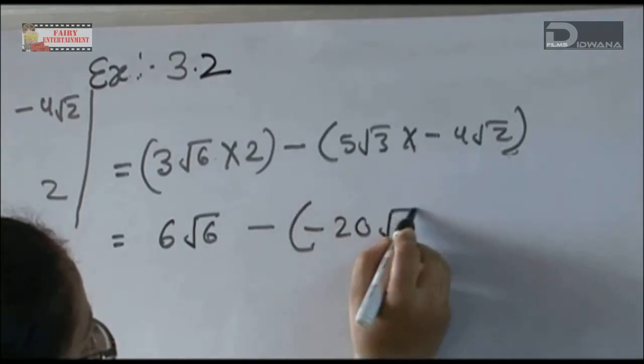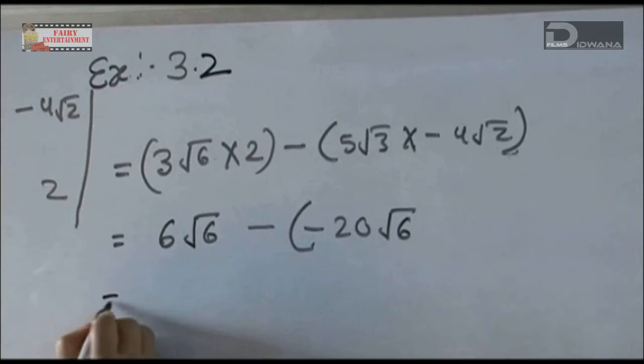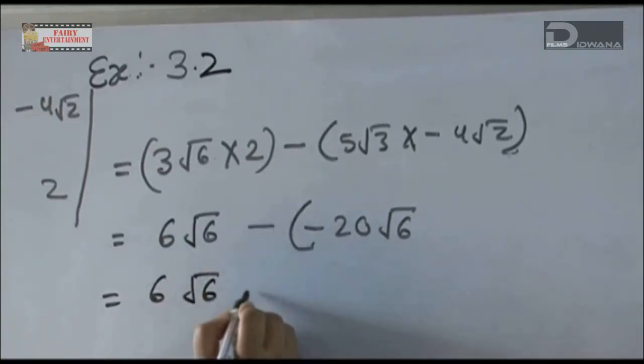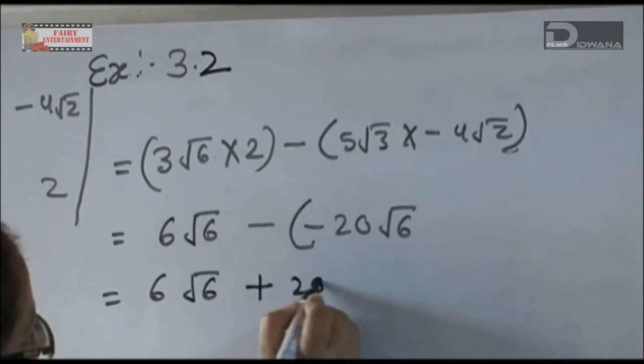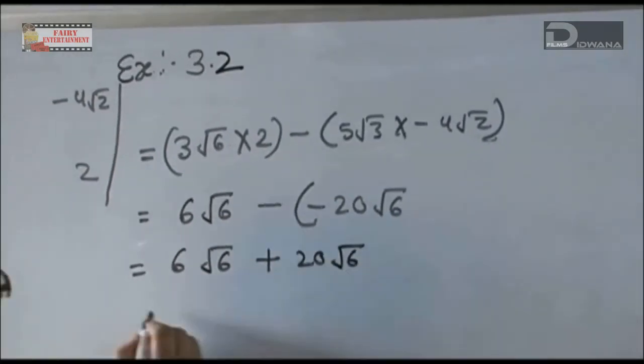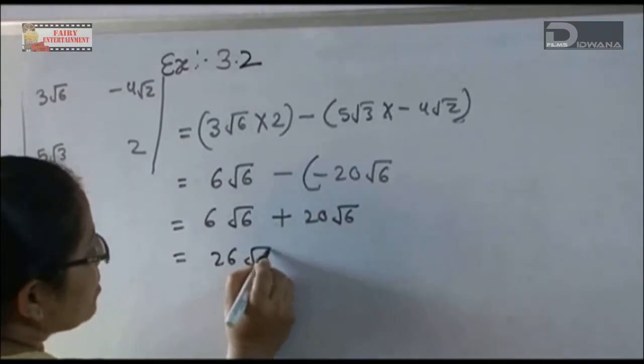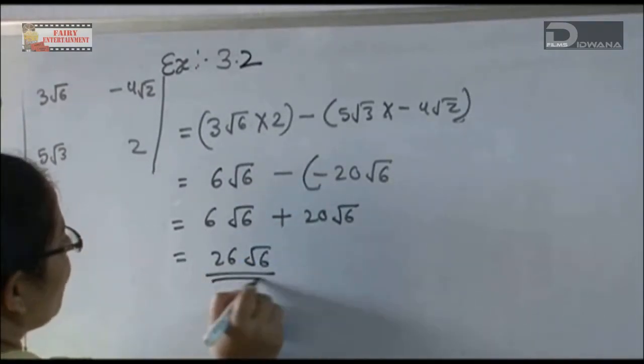3 times 2 is 6, √6. It will be 6√6. Minus minus will be plus 20√6. It will be 26√6, the value of the first equation.